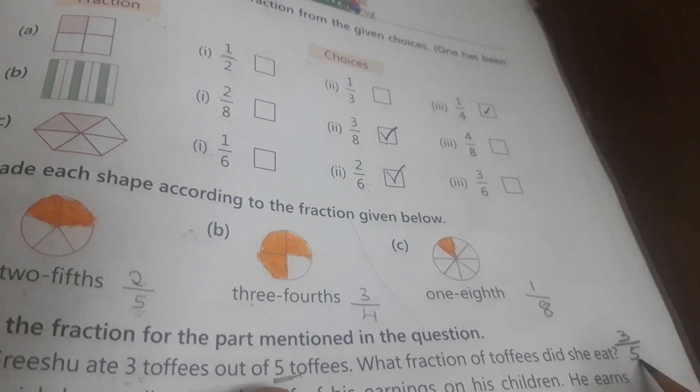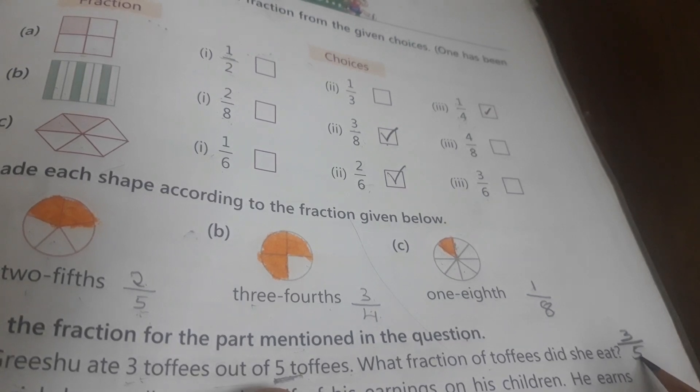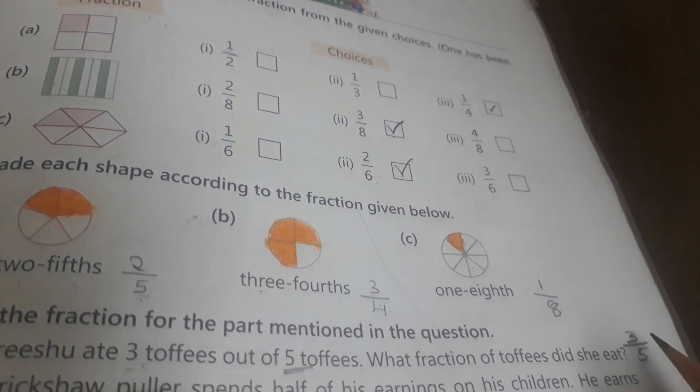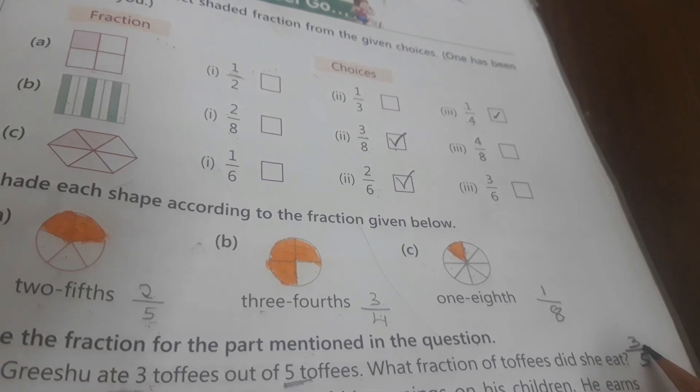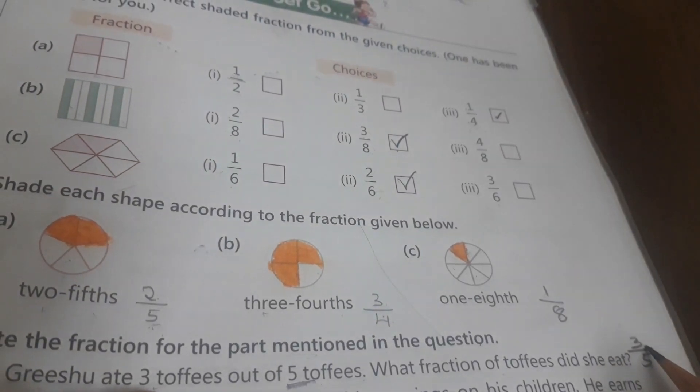Out of. What is given out of? That we have to write first. Total 5 hai, 5 toffees. 3 chocolate khaaya hai.